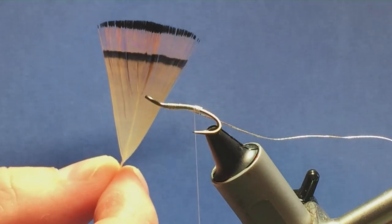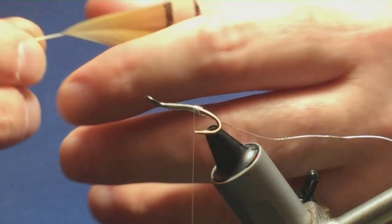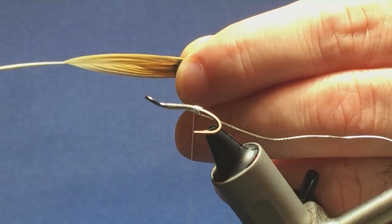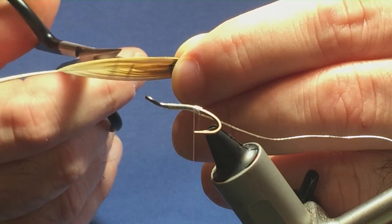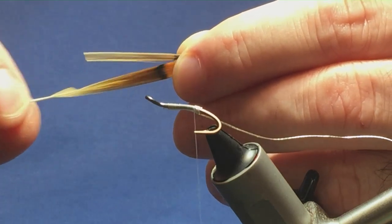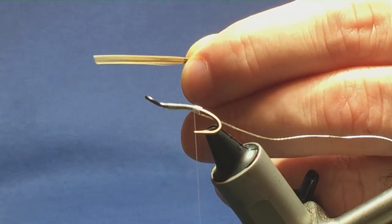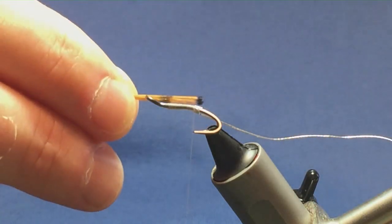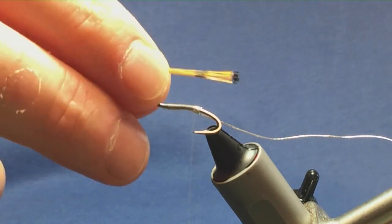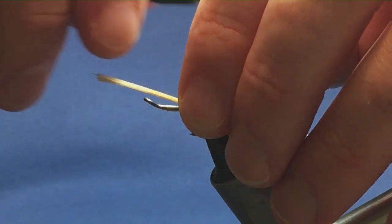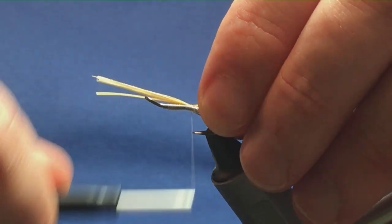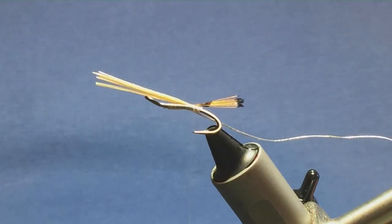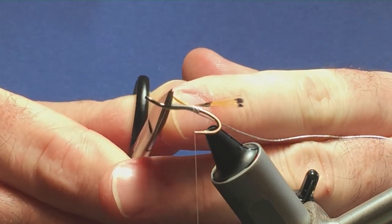Now the tail on the fly is golden pheasant tippet. Now all I do is just pull the tippet feather in, nice and tight, come in with my scissors and just remove the fibers that I think that I need for the fly. Now the length of the tail can be up to yourself but I'm just going to have the length of the body over the back. A couple of turns just to tie this in. And then I'm just going to come in and trim this the length of the body.